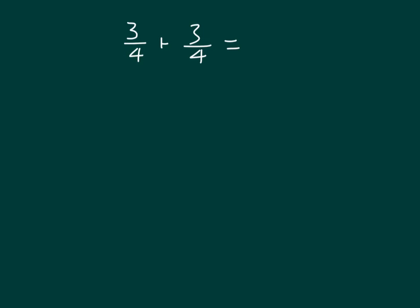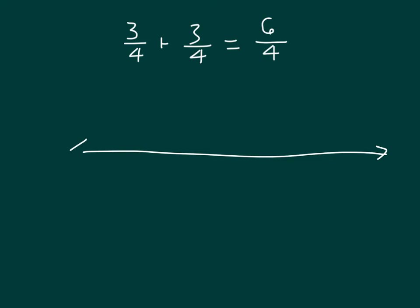Here's another problem: three-fourths plus three-fourths. Our denominator stays the same because we're talking about fourths, and three plus three is six, so we have six-fourths. We noticed that six-fourths is actually more than one. Let's draw a number line to model this addition problem. We start at zero, and this time we'll mark the whole numbers one and two. We were working with fourths, so in between each of the whole numbers, we'll divide it into four parts.